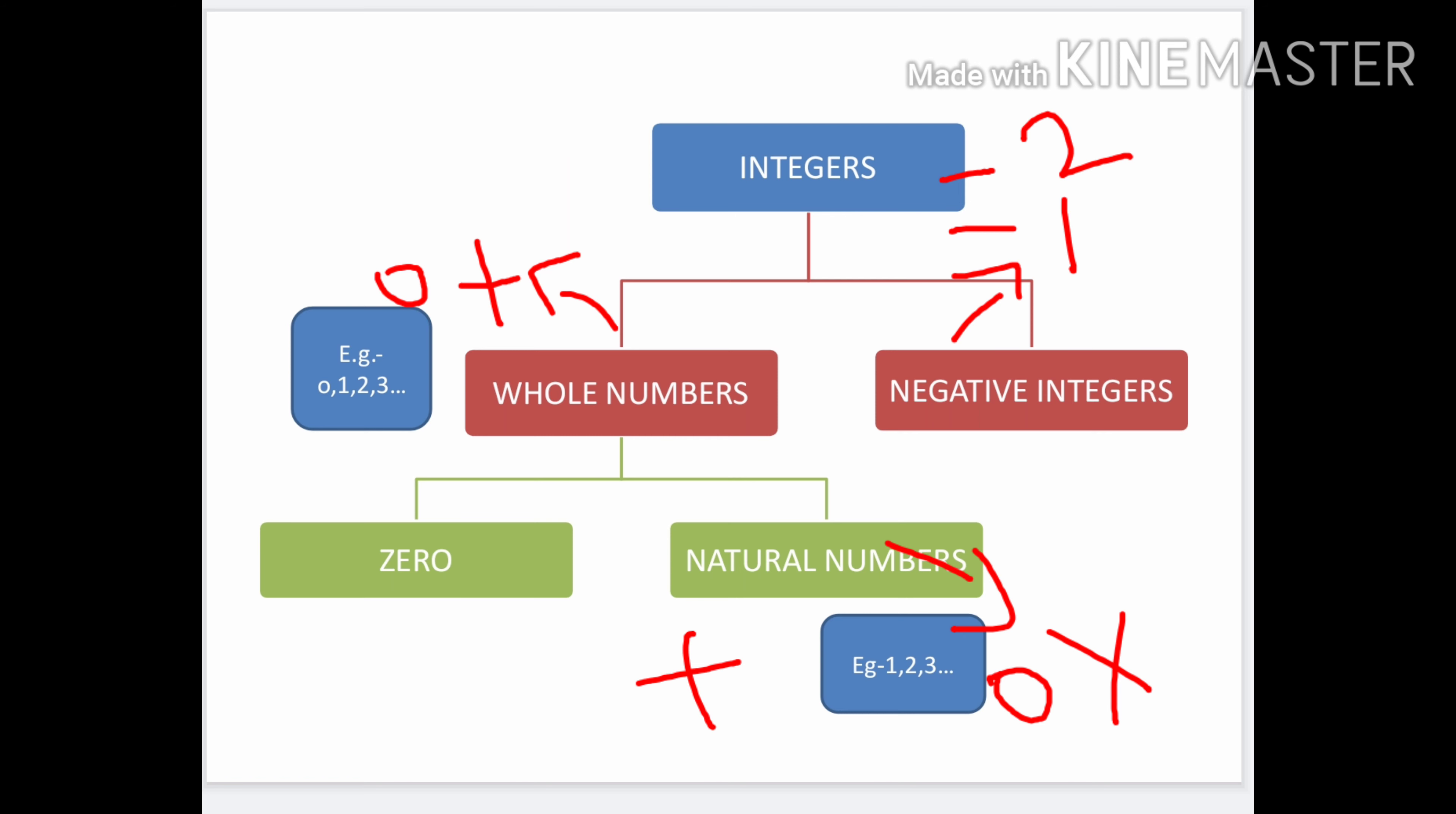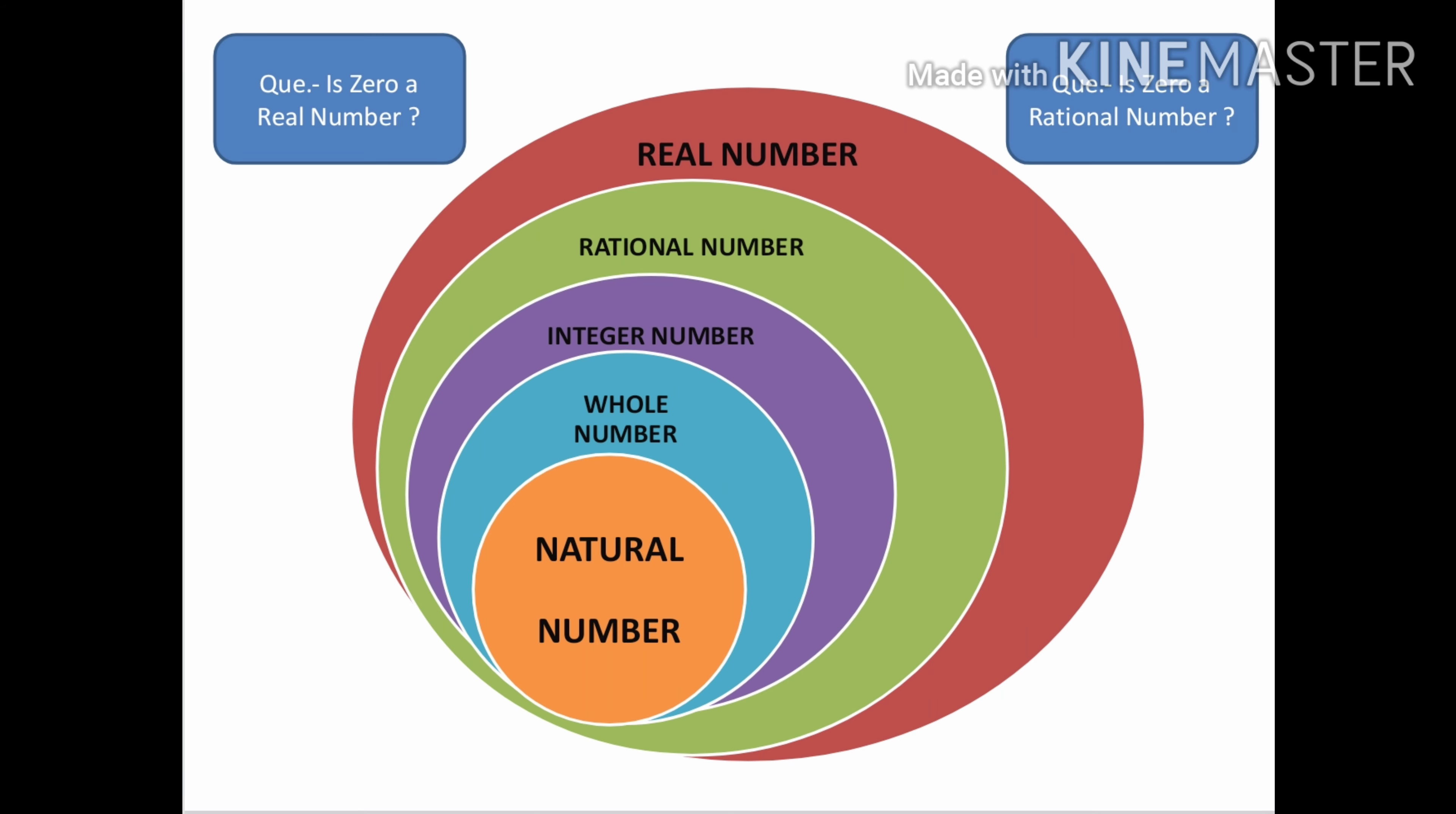So this is the complete chart of our number system. With the help of this chart we can easily identify which numbers belong where. This chart is very important. With its help you can easily solve objective questions in exams. As I told you in the beginning, real numbers have two types: rational and irrational. Irrational is not classified further. Rational numbers are easy to identify because they include root or pi related numbers. But in these numbers there is confusion.